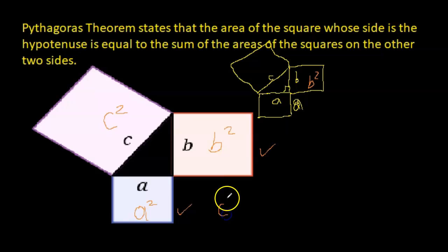C square, which is what the area of this square would be equal to. And of course, it will be equal to the summation of this square, A square, plus this square as B square. And that's the fundamental principle of Pythagoras theorem.